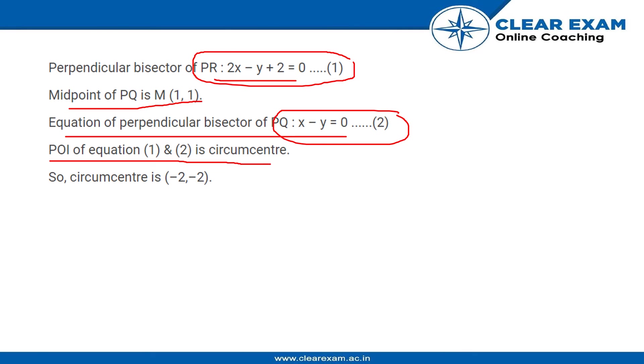So if we solve both these equations, that is if we subtract equation 2 from equation 1, we can get x = -2, and if we put x over here we can get y = -2. So the circumcenter point becomes (-2, -2).